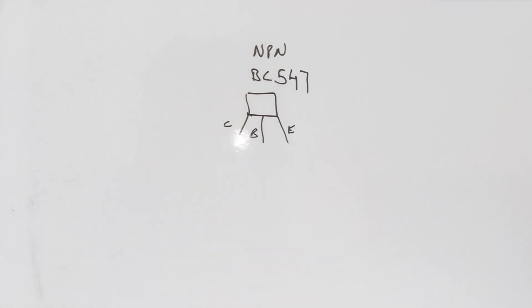Now I connect a resistor to the base terminal of the transistor and connect it to the positive terminal of the battery, and connect the negative terminal of the battery to the emitter.